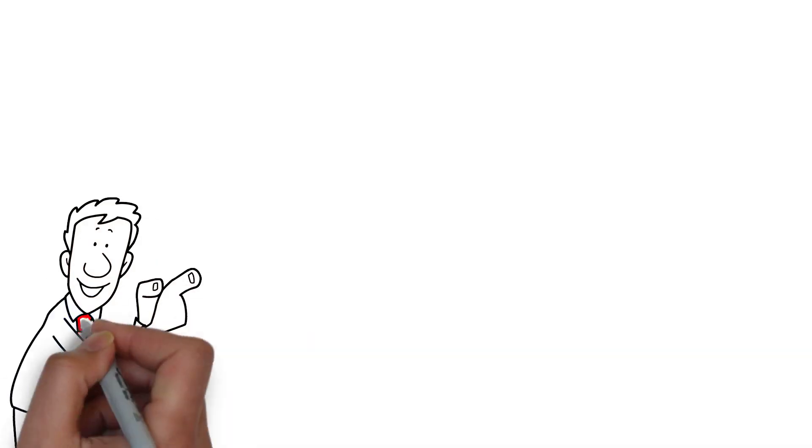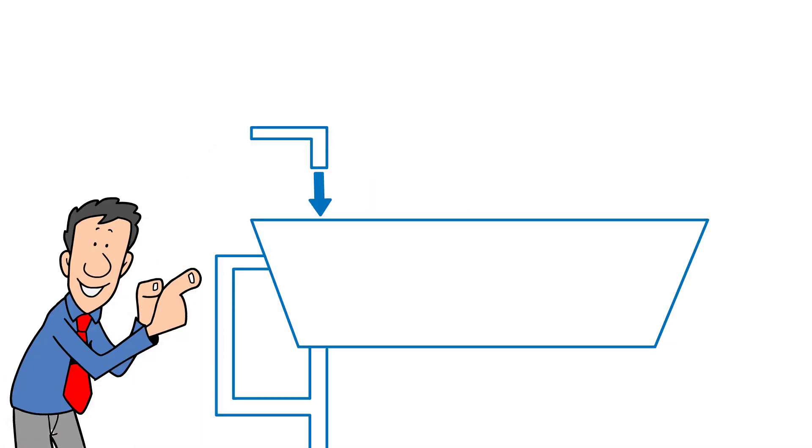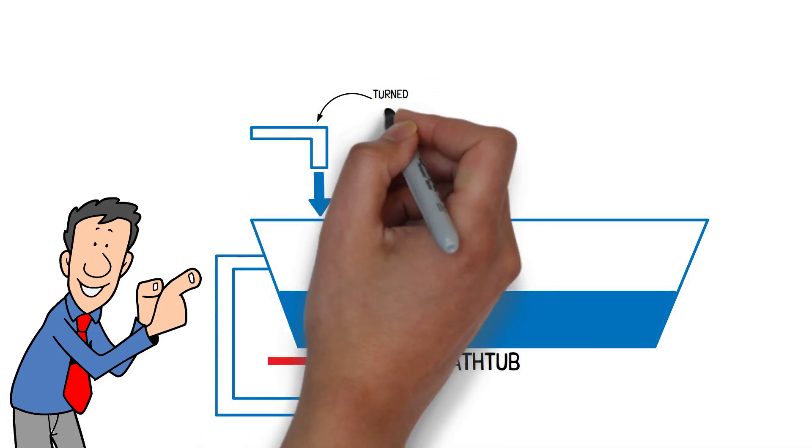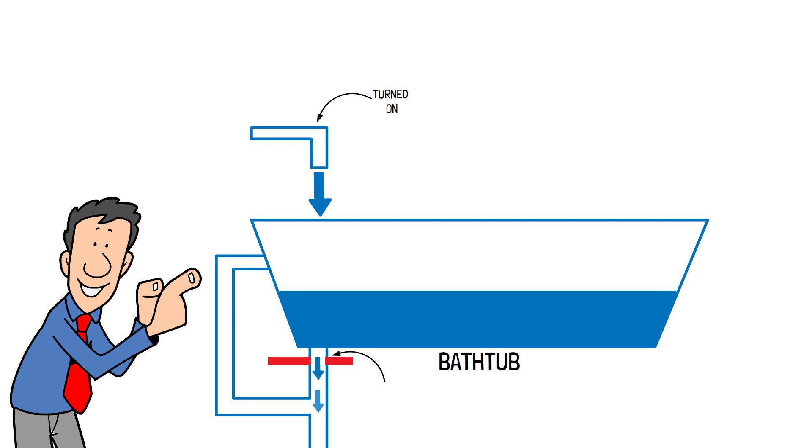To understand how lake levels work, we'll use the analogy of a bathtub. To fill a bathtub, the drain must be closed and the faucet turned on. If the drain is open and its capacity is greater than the faucet's, the bathtub will not fill because water